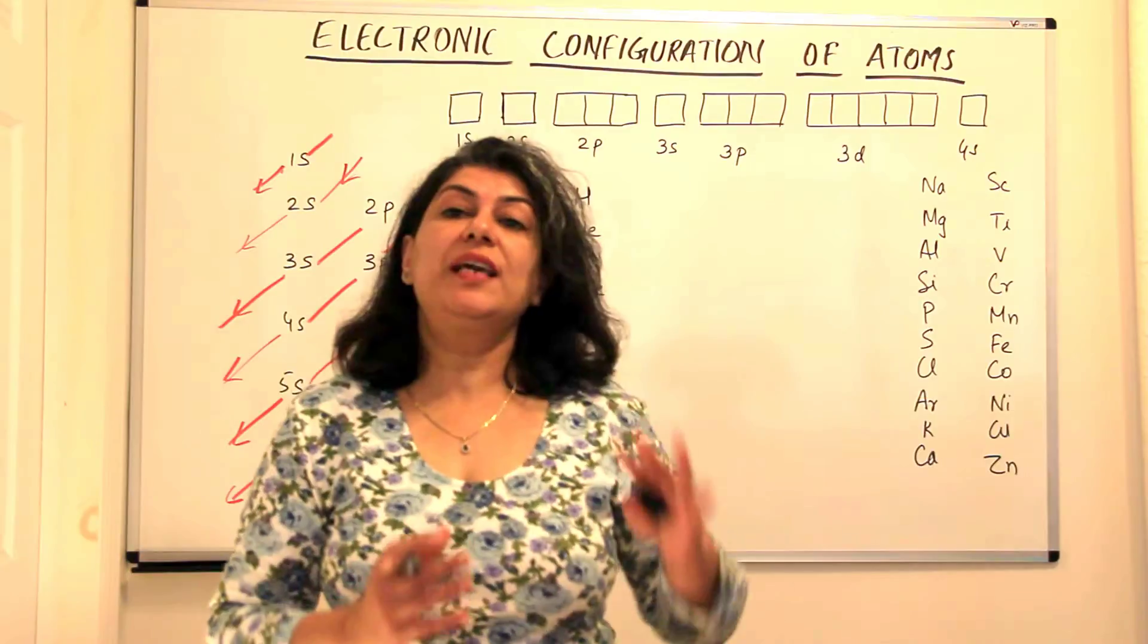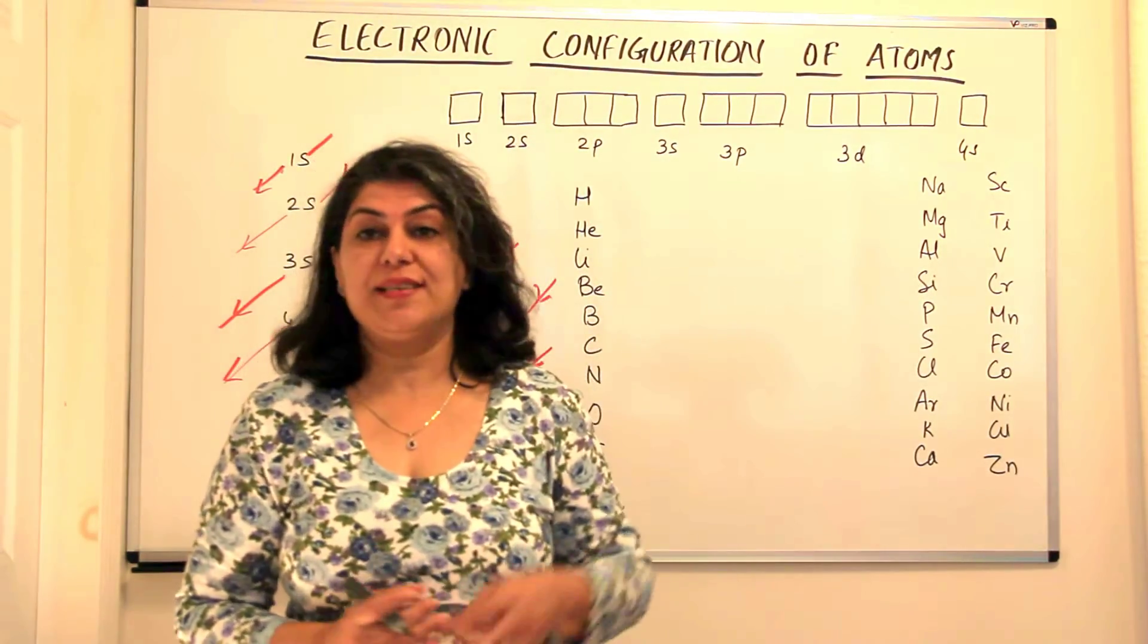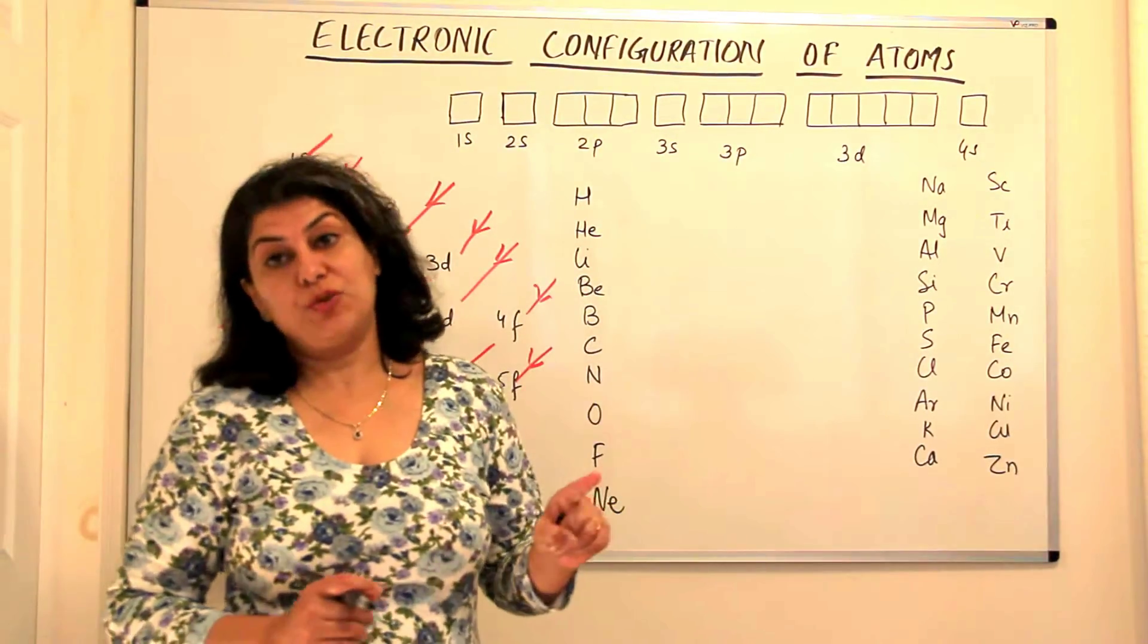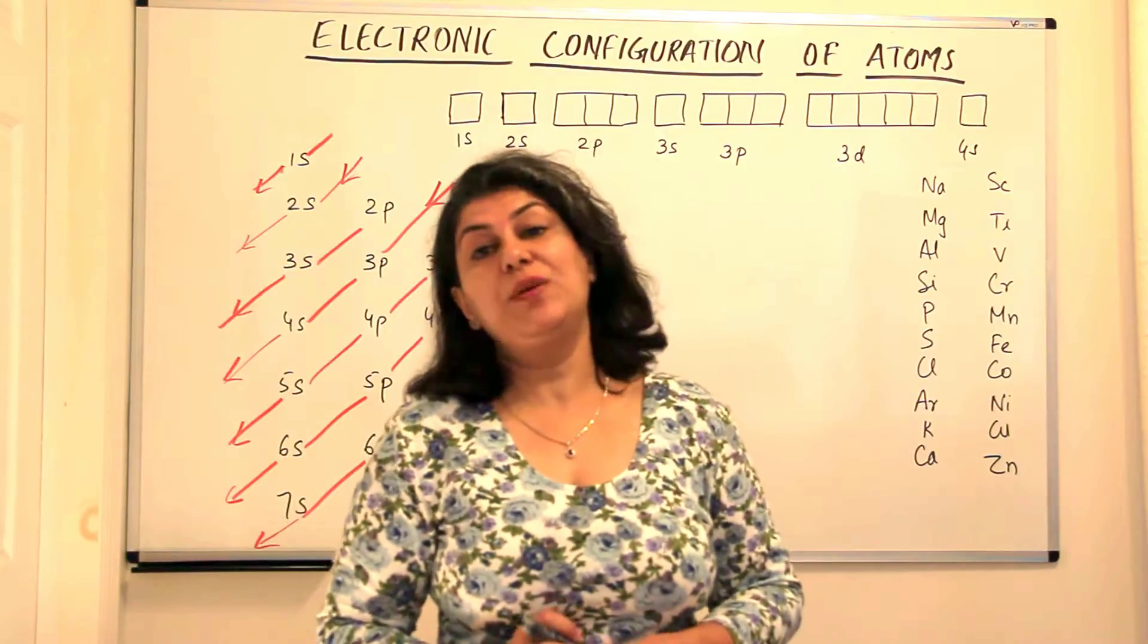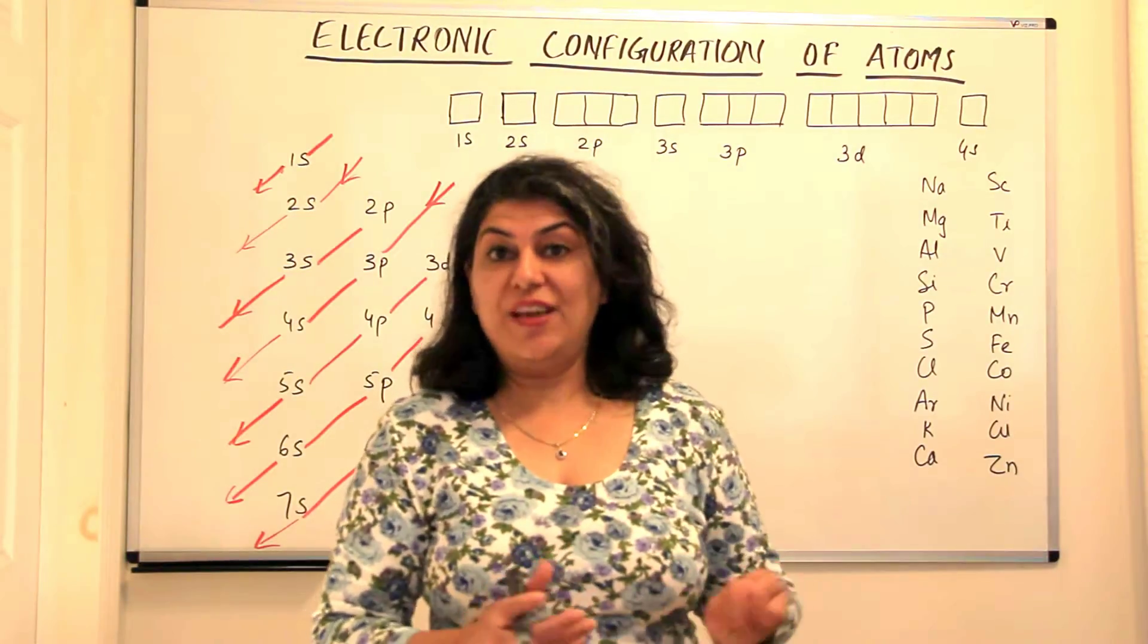But learning the configurations of these first 30 elements gives us that trend and makes us understand the remaining configurations very easily too. So let us start with the first element. I have arranged these according to their atomic numbers, which means according to their number of protons. And in a neutral atom, the number of protons is equal to the number of electrons.